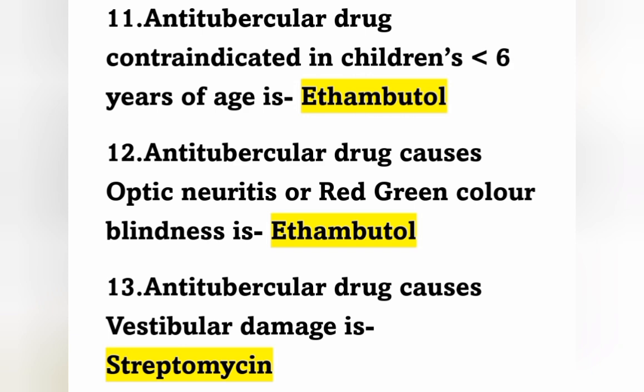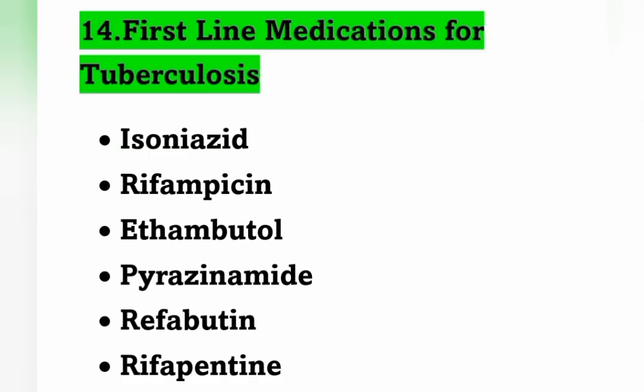Anti-tubercular drug that causes optic neuritis or red-green color blindness is Ethambutol. Anti-tubercular drug that causes vestibular damage is Streptomycin. So optic neuritis or red-green color blindness is due to Ethambutol, and vestibular damage occurs with Streptomycin — this is an important point.